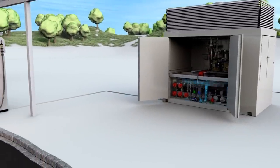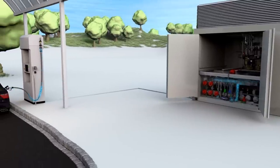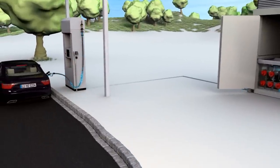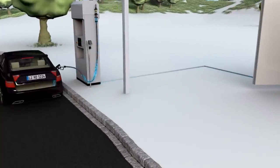The hydrogen now flows through the dispenser lines towards the dispenser. Safety-relevant parameters are constantly monitored before and during the refueling process.